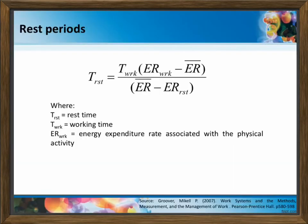We have the rest periods formula: T rest equals T work times the quantity (ER work minus ER bar), all over (ER bar minus ER rest). Where T rest is your rest time, T work is your working time, ER work is the energy expenditure rate associated with the physical activity, and ER rest is your resting energy expenditure rate.